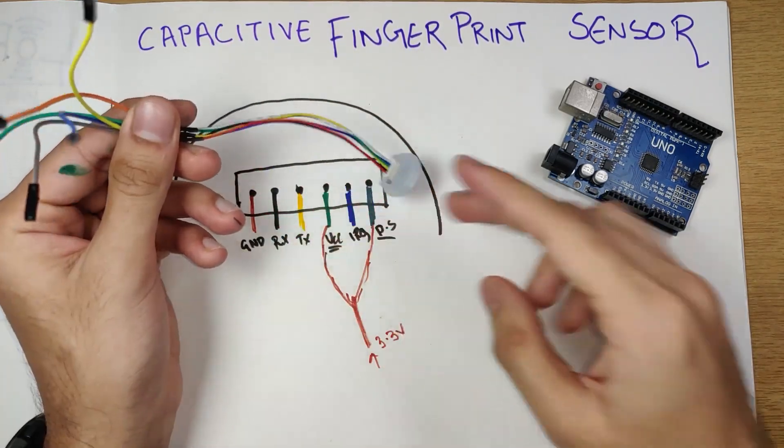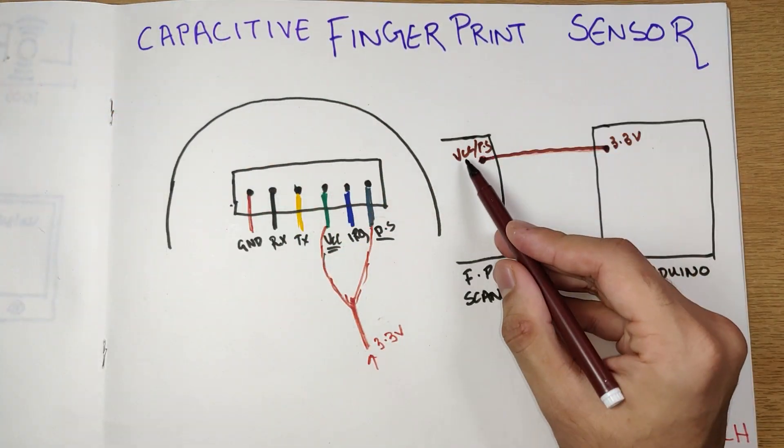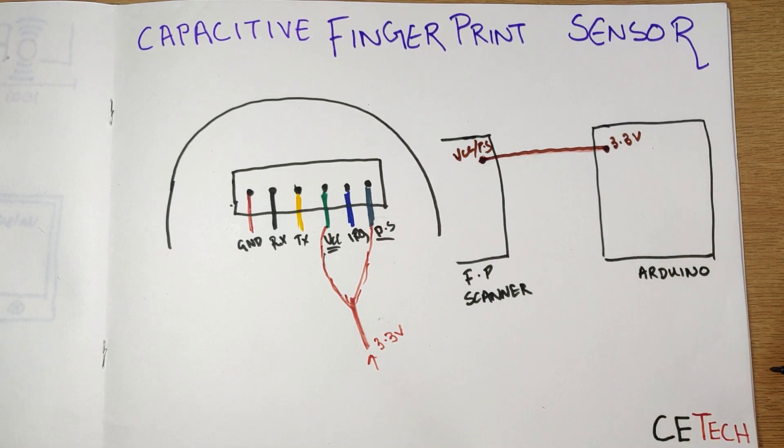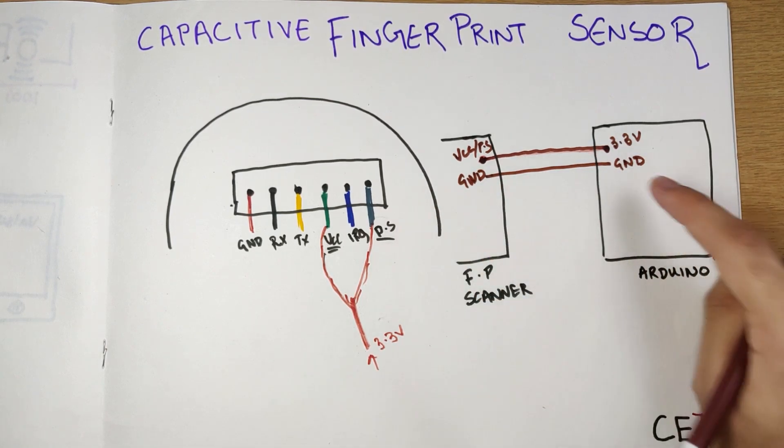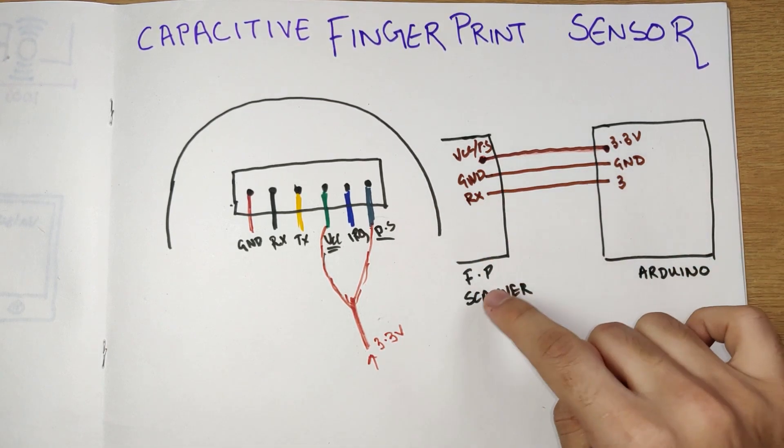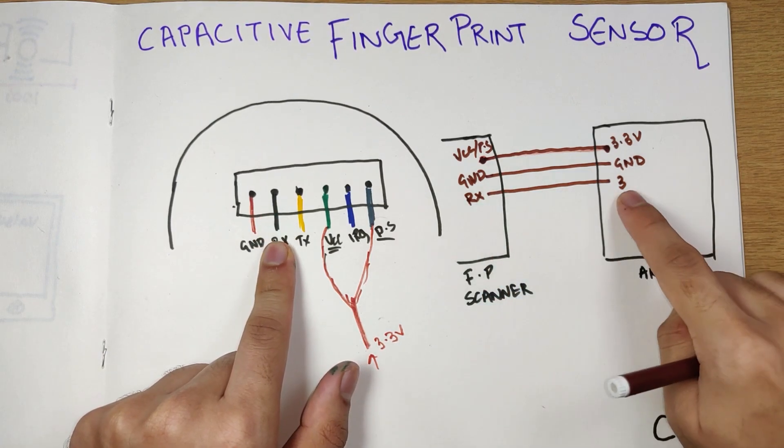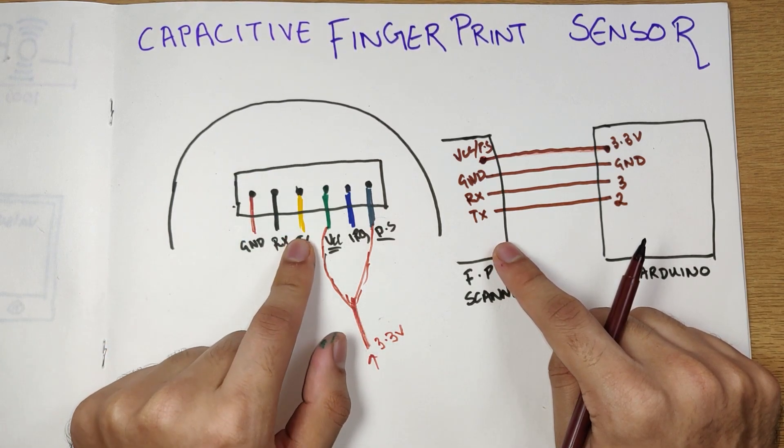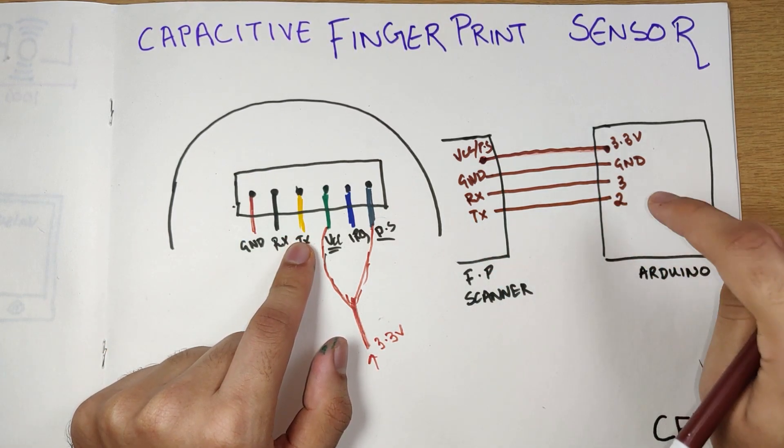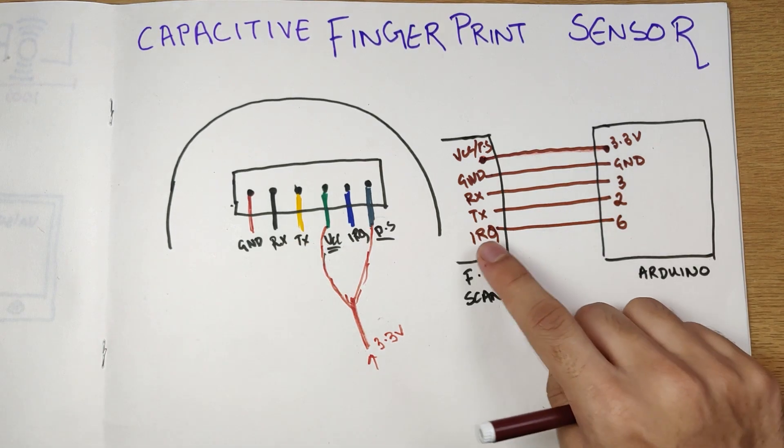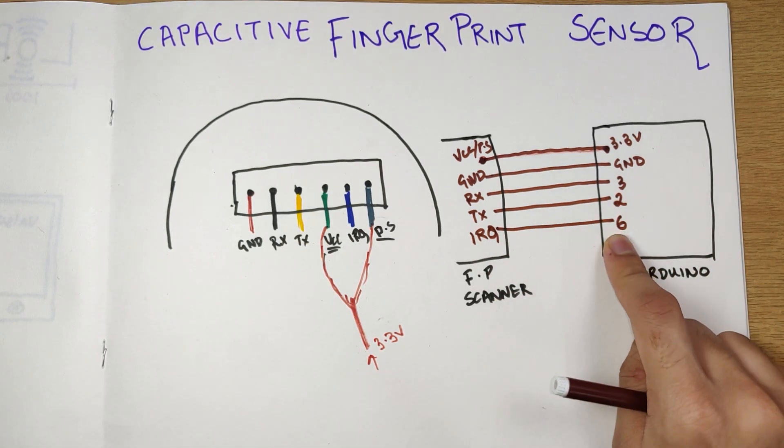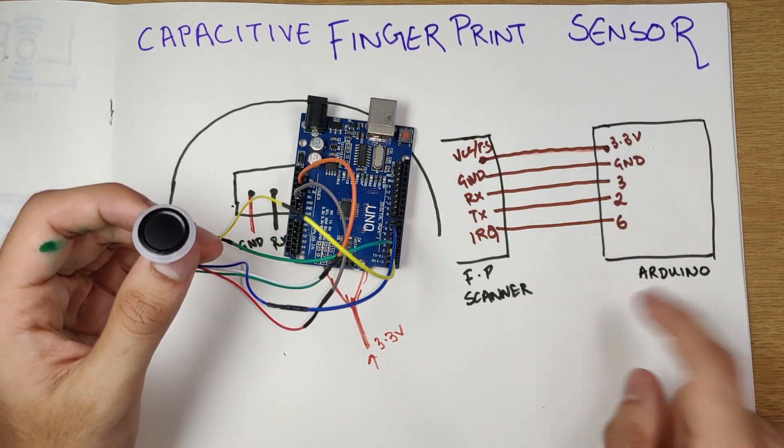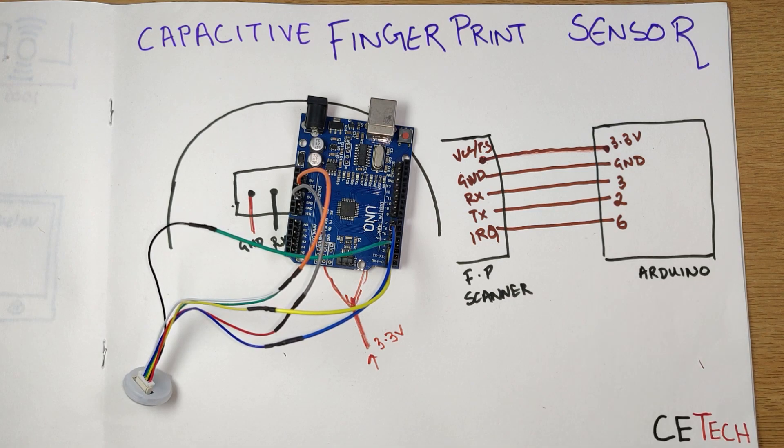Now let's look at the connections of this with the Arduino Uno. The VCC and the power supply pin of the fingerprint scanner goes to the 3.3 volt pin of the Arduino. The ground pin goes to the ground pin of the Arduino. The RX pin, that is the black wire, goes to digital pin 3 of the Arduino. The TX pin or the yellow wire goes to pin number 2 of the Arduino. And finally the IRQ pin goes to pin number 6 of the Arduino. So I've connected the fingerprint scanner to the Arduino according to this diagram. Now let's move on to our laptop for the next steps.